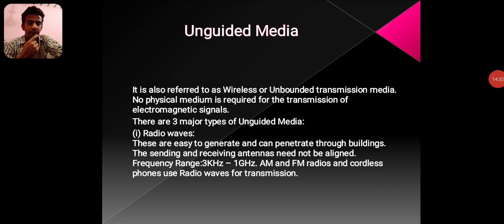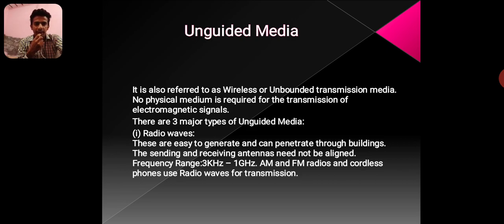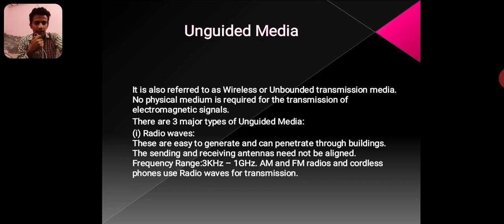Unguided Media. Unguided media is also referred to as wireless or unbounded transmission media. No physical medium is required for the transmission of electromagnetic signals. There are three types of unguided media. Radio waves are easy to generate and can penetrate through buildings. The sending and receiving antennas do not need to be aligned. Frequency range: 3 KHz to 1 GHz. AM and FM radio, as well as wireless phones, use radio waves for transmission.